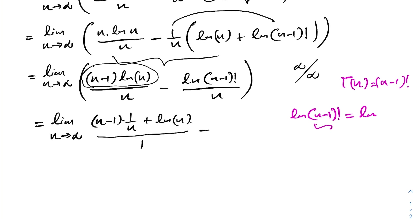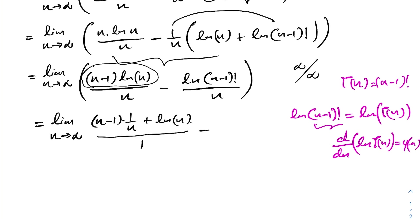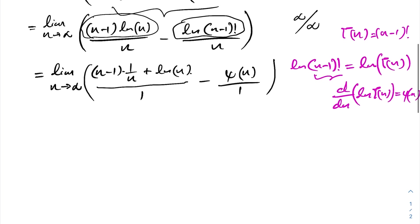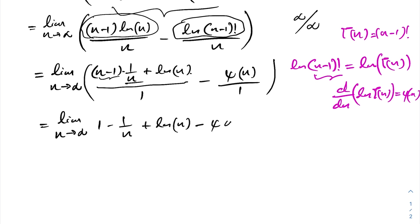Since n minus 1 factorial equals the gamma function Γ(n), we differentiate d by dn of natural log of gamma of n, which equals the digamma function ψ(n). So the derivative of the numerator gives us the digamma of n over the derivative of the denominator, which is 1. Simplifying, we get the limit as n approaches infinity of 1 minus 1 over n plus natural log of n minus the digamma of n.